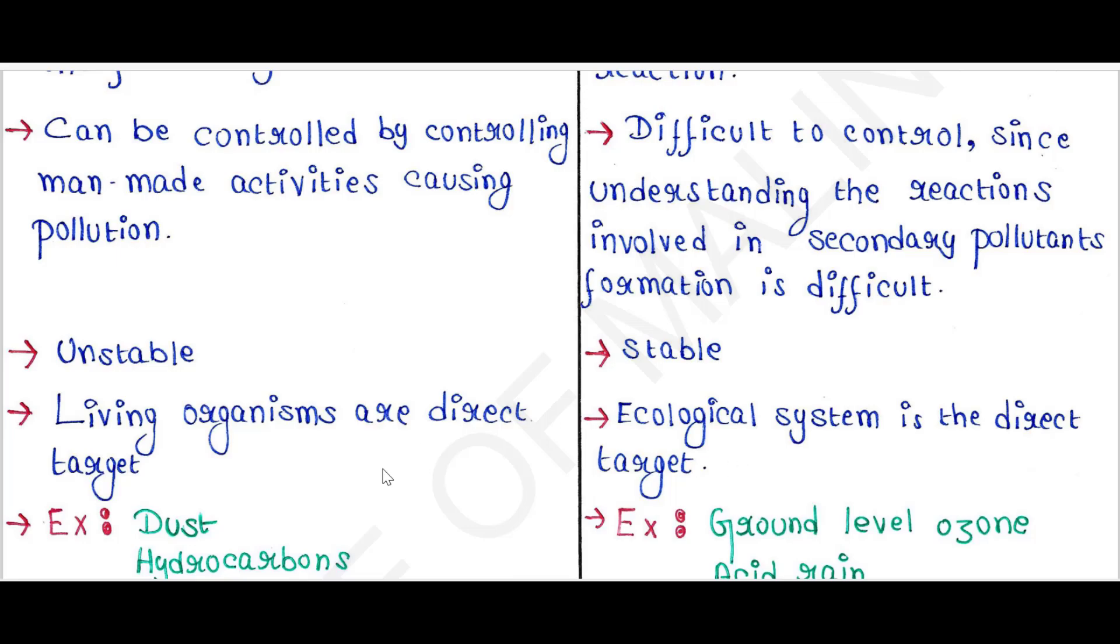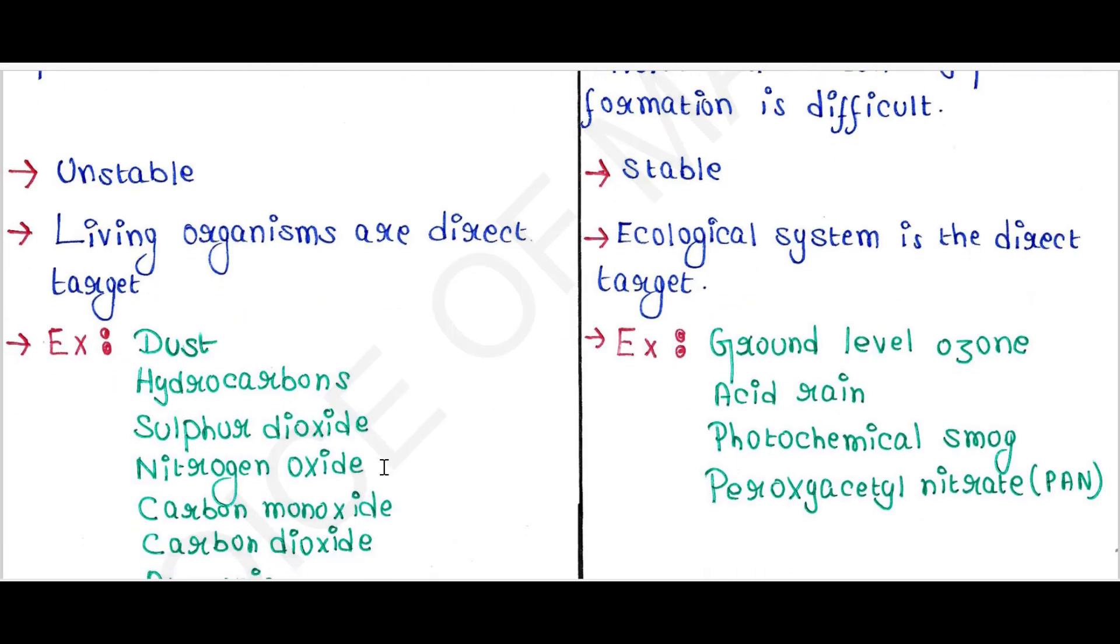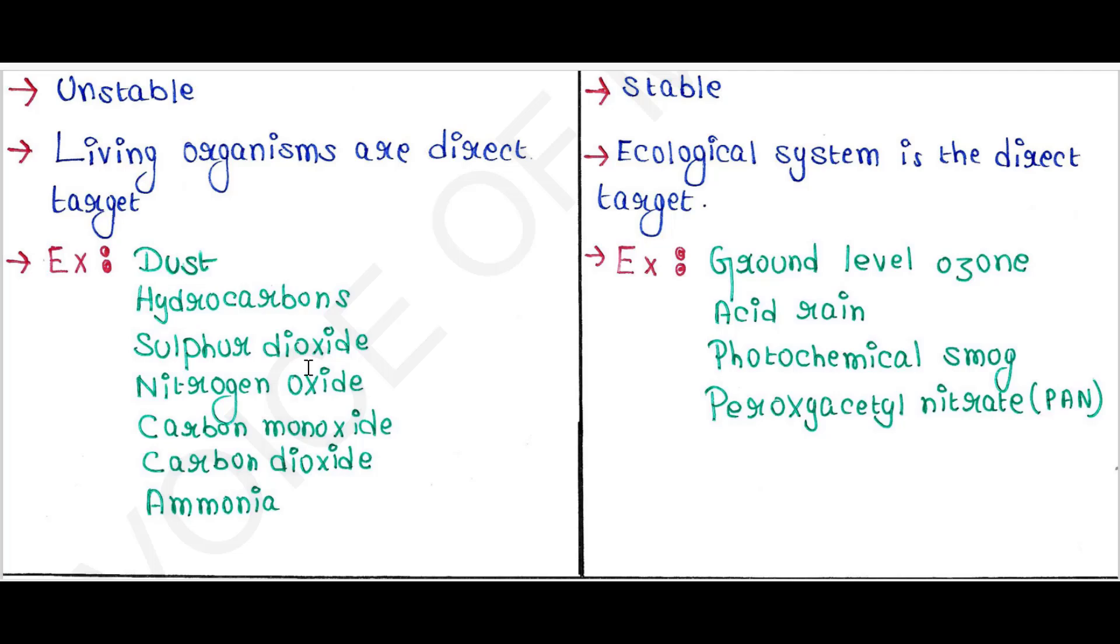Examples of primary pollutants are dust, hydrocarbons, sulfur dioxide, nitrogen oxide, carbon monoxide, carbon dioxide, and ammonia.